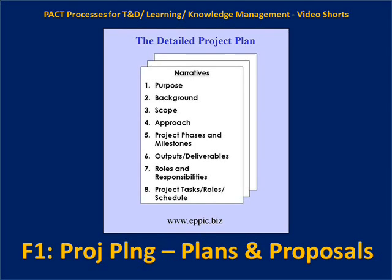This gets articulated in section four of the detailed project plan. In section five we identify what phases and milestones we're going to use to structure the project. In section six we define specifically the outputs and deliverables in great detail — what are the clients going to get for this effort, what are the deliverables in the context of the phases and milestones, and what level of depth of information might one find in these outputs?